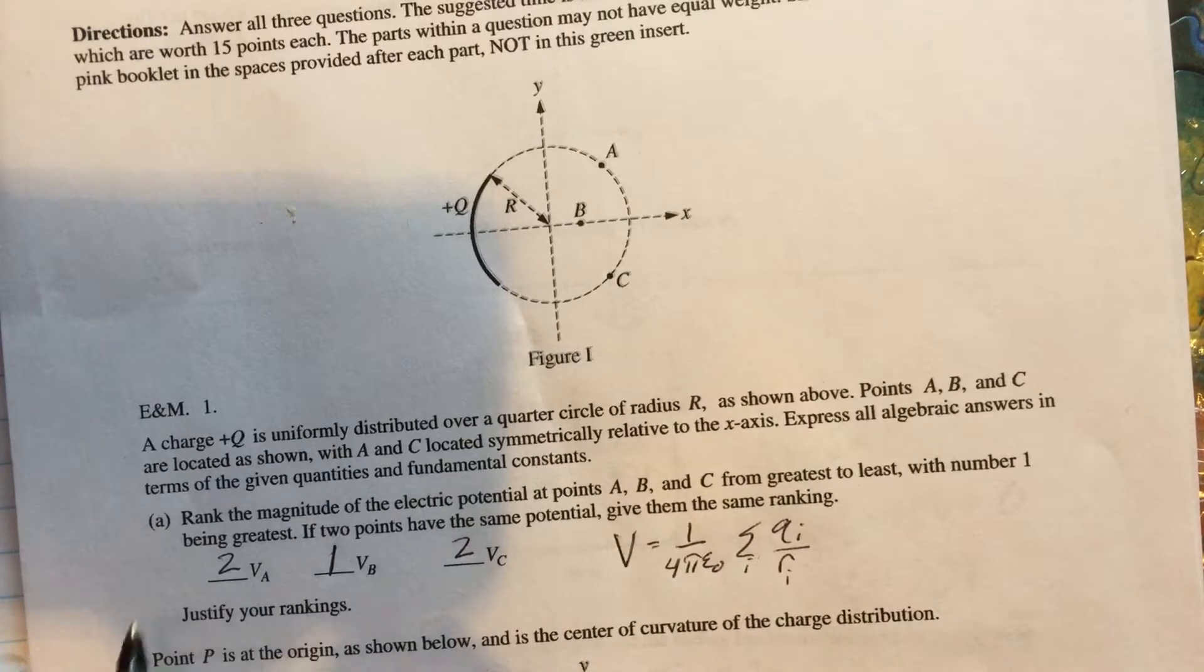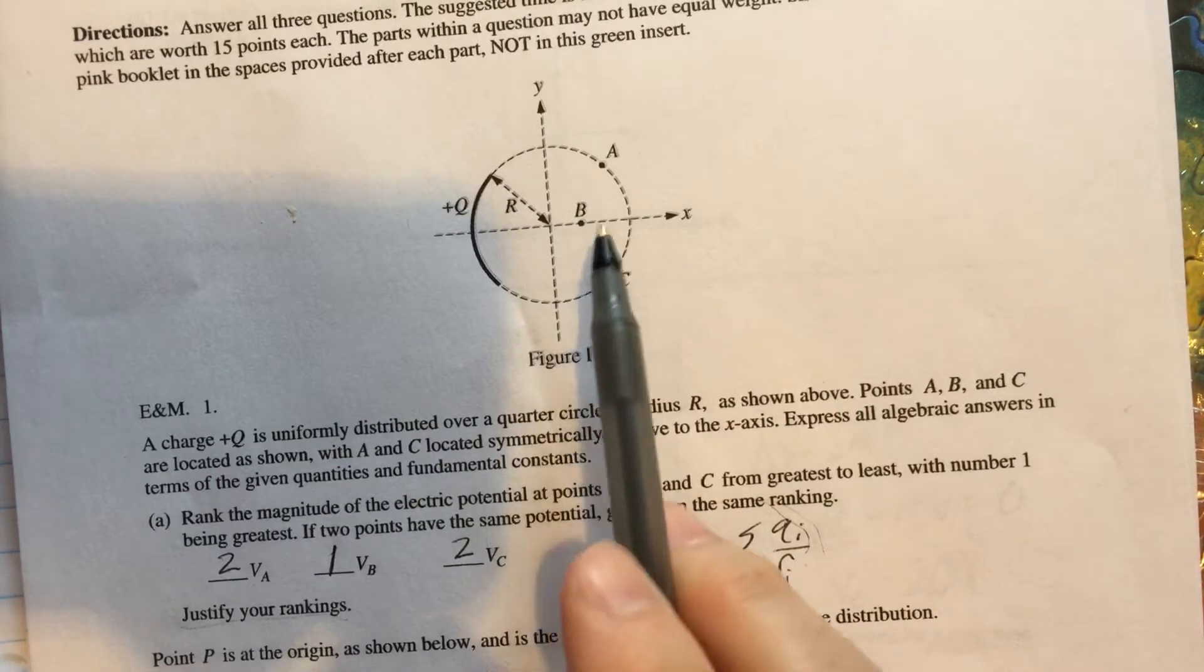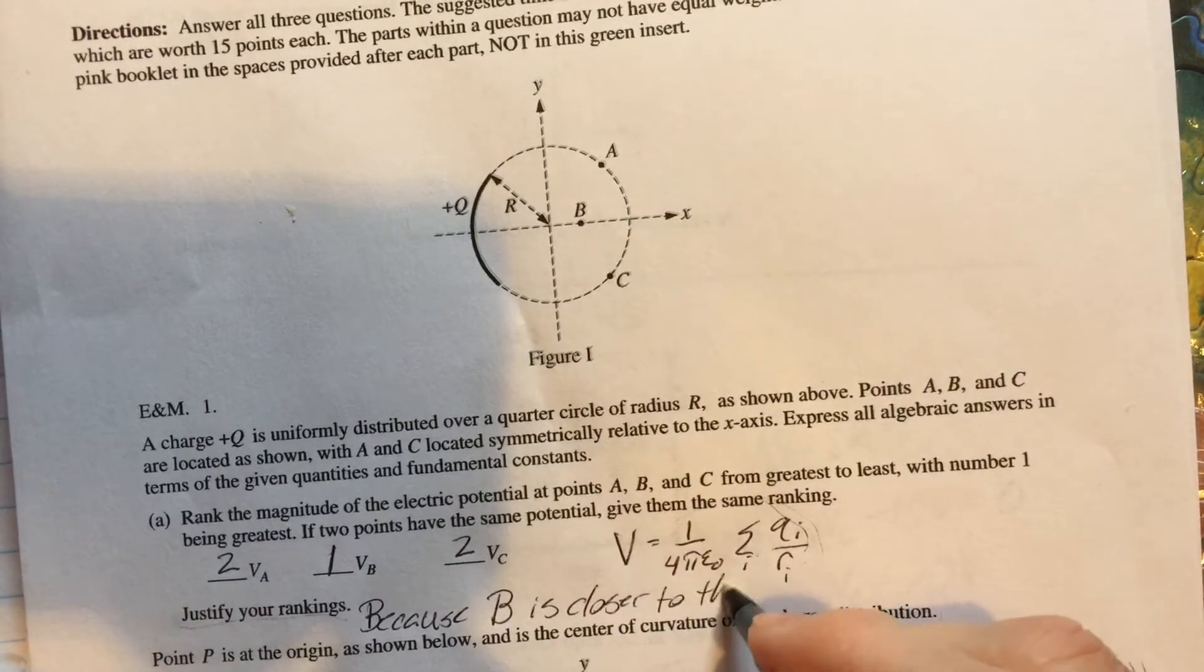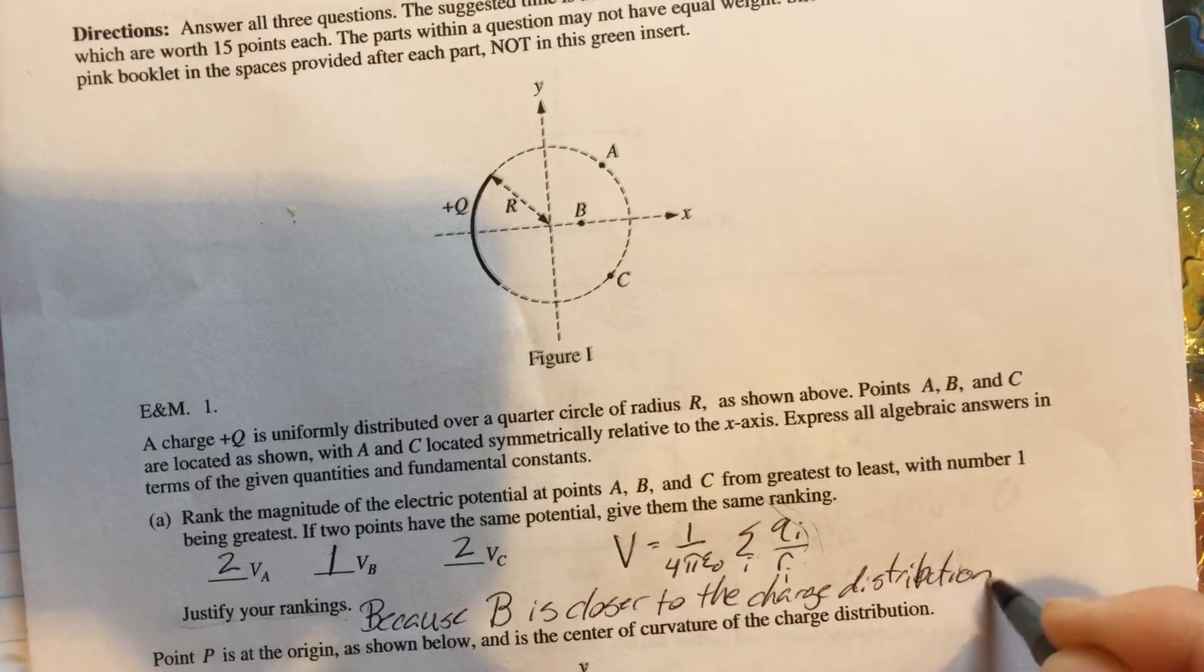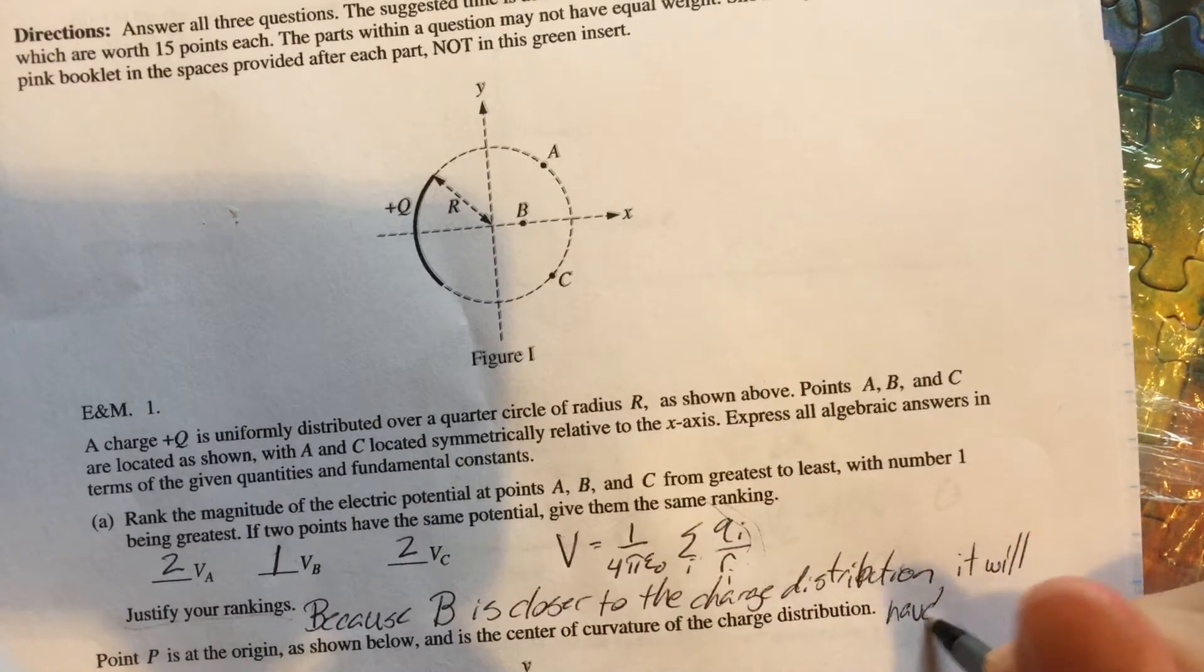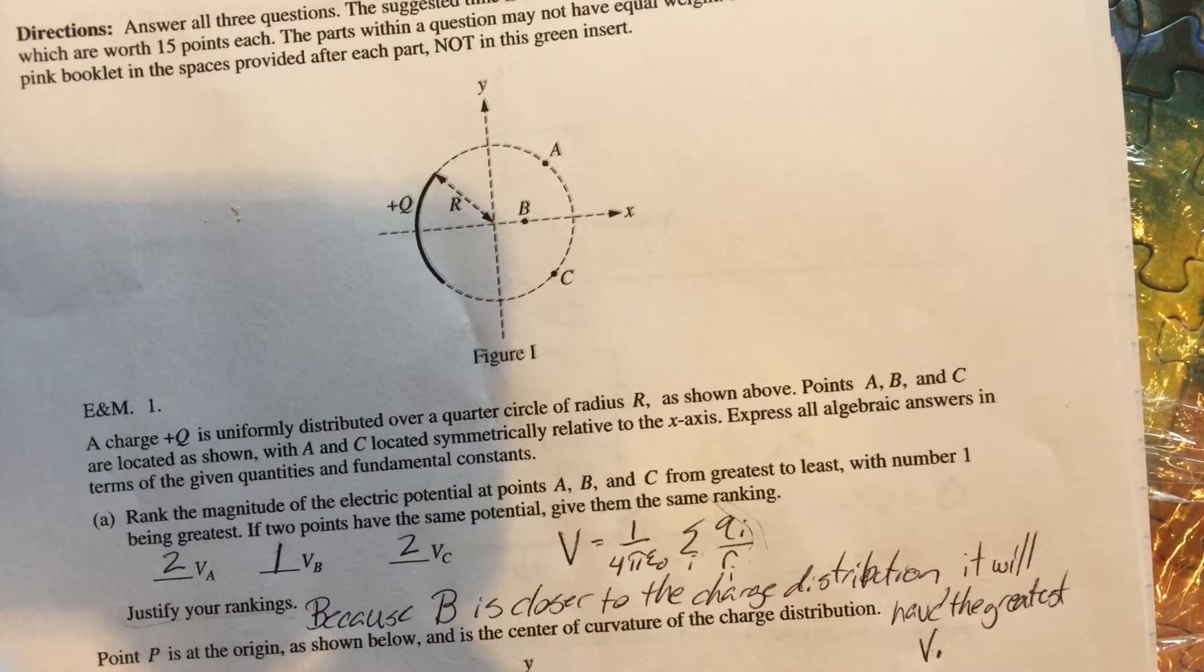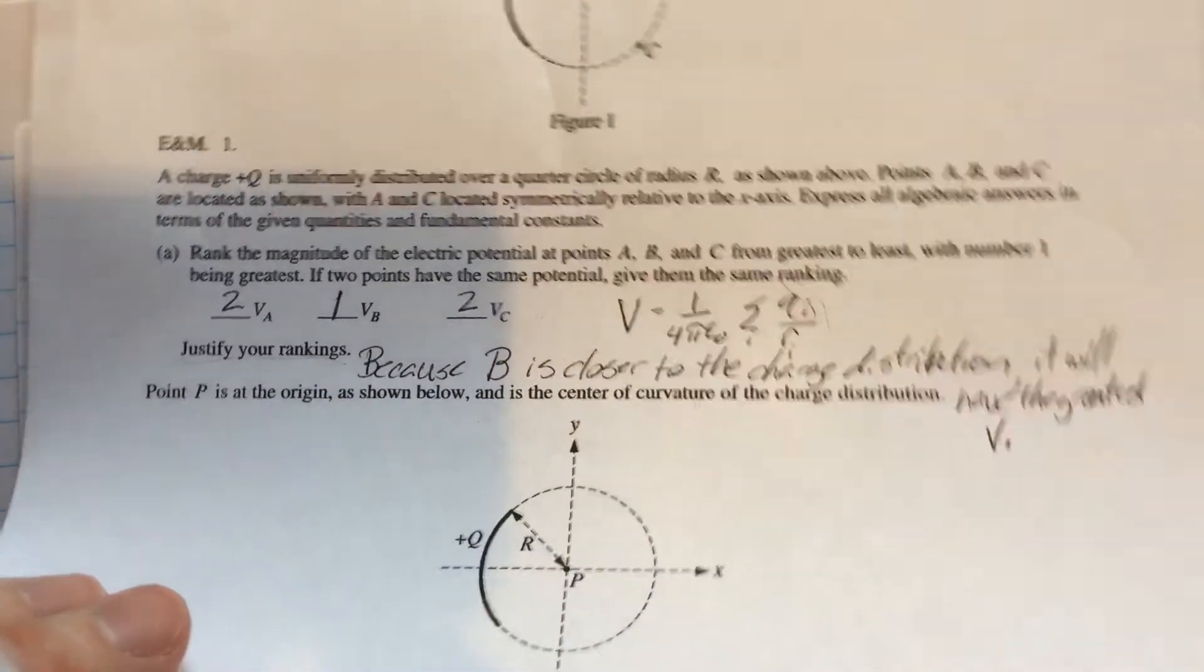The thing is, we want to justify. Make sure you do this step and you justify your rankings. This is going to be part of our justification. Basically, I'd say that because B is closer to the charge distribution, it will have the strongest or the highest or the greatest potential. And then I would also probably explain that A and C are equidistant. So this problem goes on to the next page. Hopefully I have the next page. That would make good. There we go.